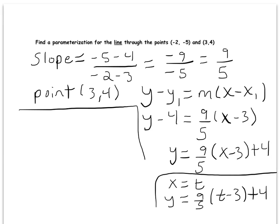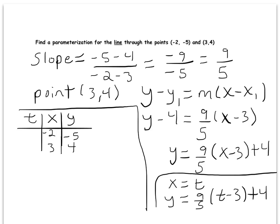Another way to come up with a parametrization — not the trivial one — is to make a table with t, x, and y, then come up with a rule that works for x and t and then for y and t. My points are (negative 2, negative 5) and (3, 4). Since I'm coming up with the parametrization myself, I can pick the time value to start at. I'll say at time t equals 0 I'm at the point (negative 2, negative 5), and after one unit of time I'm at the point (3, 4).